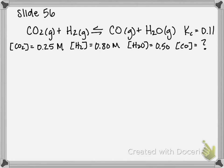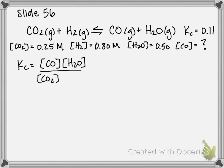The first step is to write our equilibrium expression so we can plug numbers into it. Kc is going to be equal to — looking at the reaction, everything is in the gas phase, so everything is included. On top, the products: concentration of CO times concentration of H₂O. Neither is raised to a power because they both have a coefficient of 1. Over the reactants: CO₂ and H₂, also not raised to any power because they don't have a coefficient out in front.